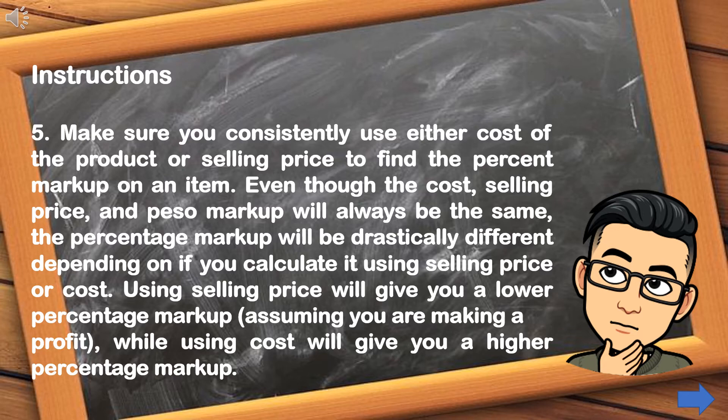Step number 5: Make sure you consistently use either cost of the product or selling price to find the percent markup on an item. Even though the cost, selling price, and peso markup will always be the same, the percentage markup will be drastically different depending on which you use. Using selling price will give you a lower percentage markup, assuming you are making a profit, while using cost will give you a higher percentage markup.